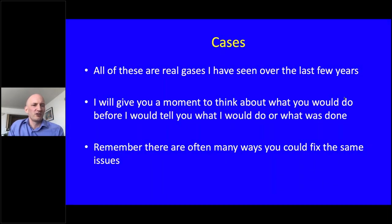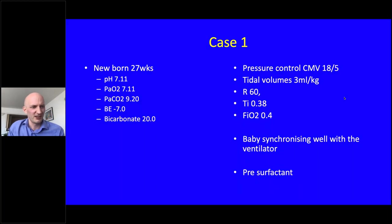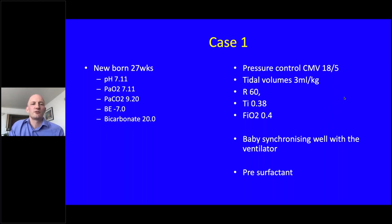In summary for HFOV: a high-volume strategy is essential, using chest X-rays to verify lung expansion and during weaning to avoid slipping into a low-volume strategy. Changing delta P alters CO2 clearance. In HFOV you can almost independently change oxygenation and CO2 clearance — much simpler than conventional ventilation. Now for some clinical cases. All are real blood gases. Case 1: a 27-weeker, PaCO2 of 9, on pressure-controlled non-triggered ventilation achieving 3 mL/kg, oxygen requirement of 0.4 before surfactant.